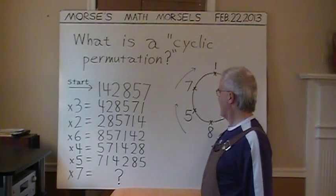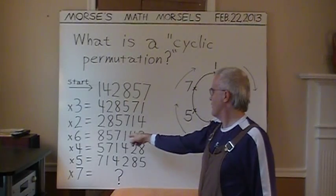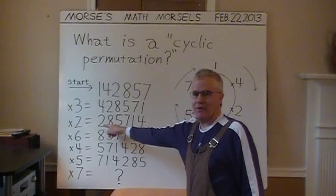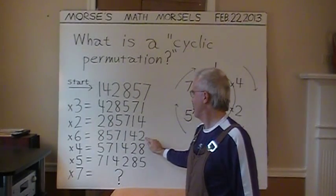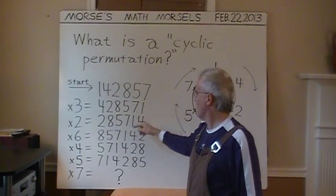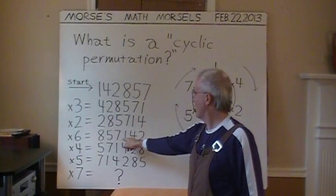And to multiply by six, getting 857142, just take the two from the left, from the front, and put it on the right side. And there's the original number times six, 857142.